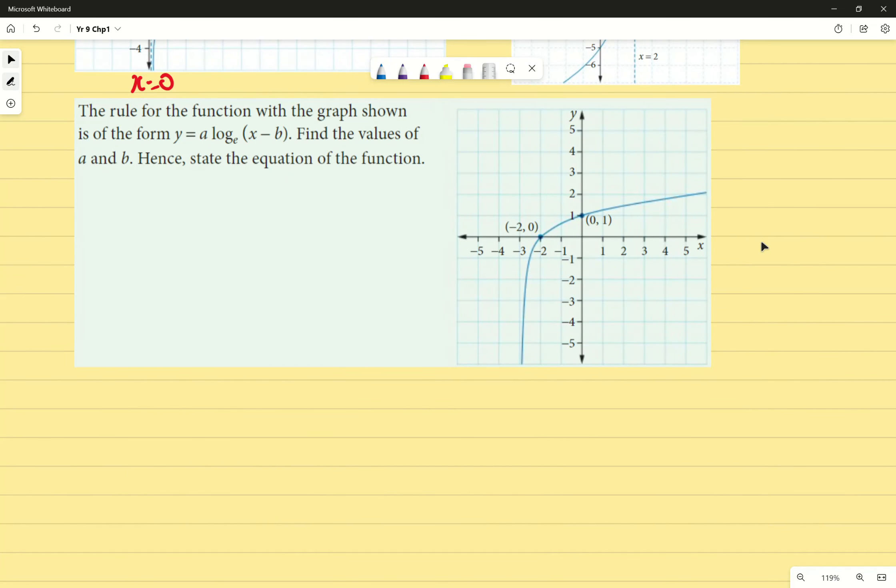This question here is a classic example of a question that you might be seeing in an assessment. The rule of function with the graph shown is of the form y equals a times log base e of x minus b. That means we've got a translation in the x-axis, and then we've also got a dilation as well in the y-axis. Find the values of a and b and hence state the equation of the function. The first thing I'm going to do is substitute 0, 1. That is the coordinate that's been given to me. It seems easier to work with. I'm going to substitute that into my generic equation, which means that I get 1 equals a times log base e of 0 minus b. Or if I rewrite that, that just gives me a times log base e of negative b.